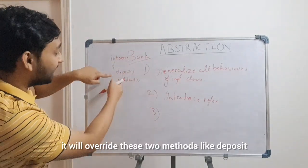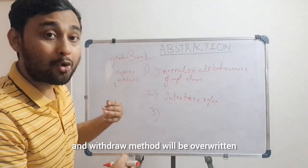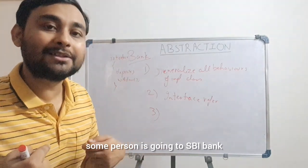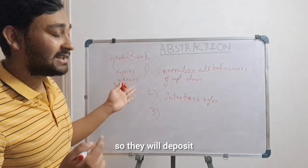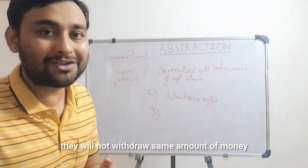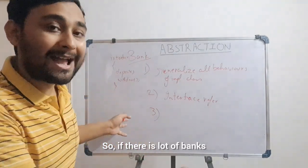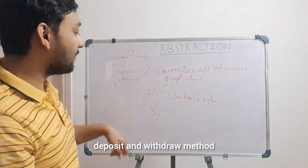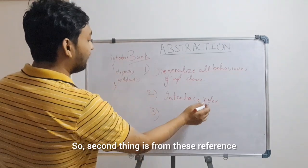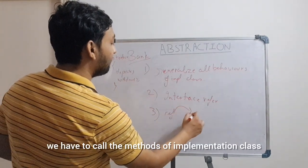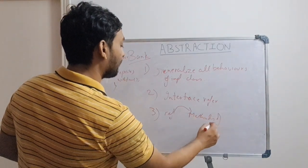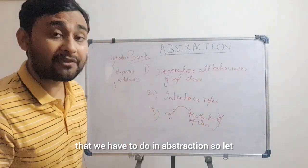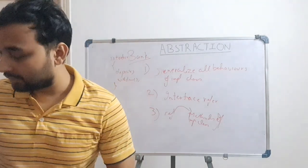The third step is: from that interface reference created in step two, you have to call the methods of the implementation class. Whenever there is one implementation class which implements the bank interface, it will override the deposit and withdraw methods because these will vary. If some person is going to ICICI bank and another to SBI bank, they will deposit or withdraw different amounts of money. So the different banks will inherit the bank features and make changes by overriding the deposit and withdraw methods. From the interface reference, we call the methods of the implementation class.